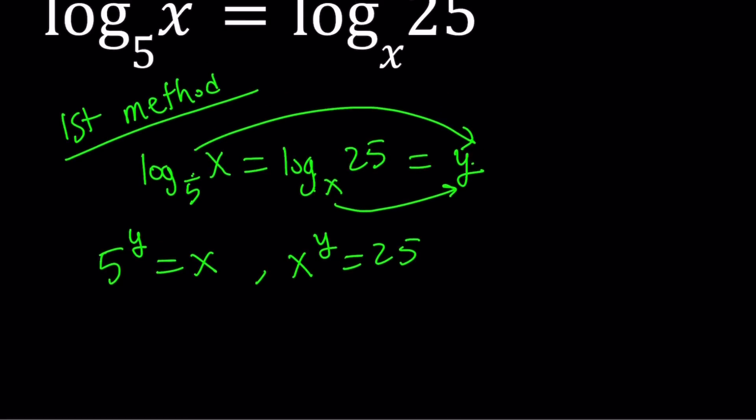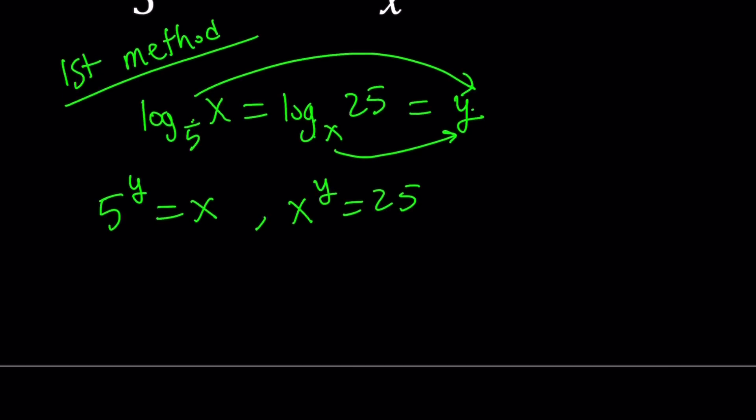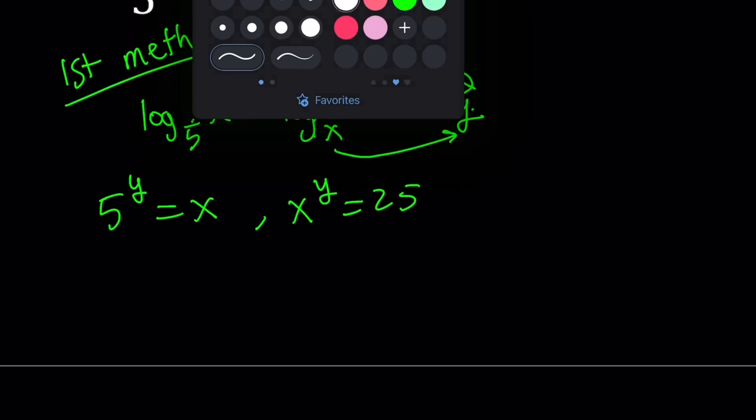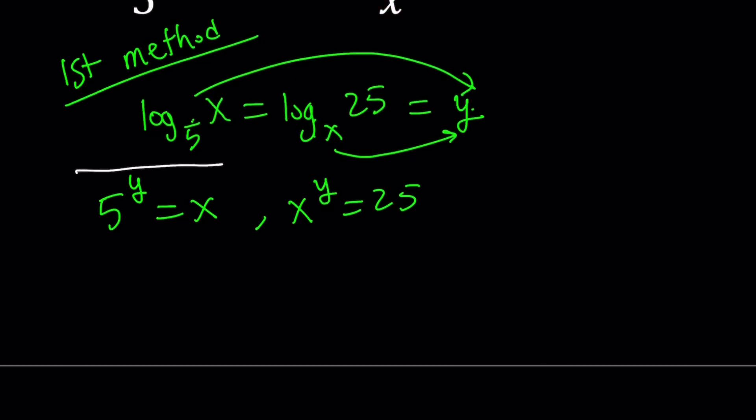So now we have these two equations, so that kind of turns into a system, which makes sense because we have two variables. So one thing we can do here is substitution. So let's go ahead and take this, 5 to the power y equals x, and substitute here because we have an x. So we can replace x with 5 to the power y. And then that gives us 5 to the power y to the power y equals 25.